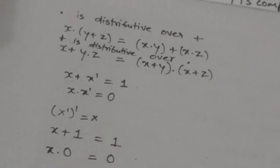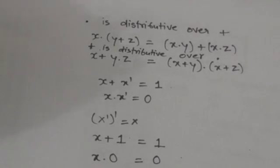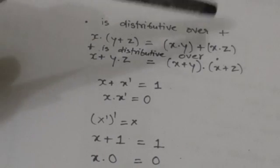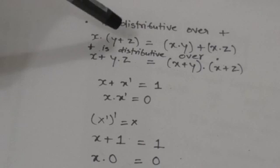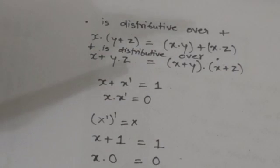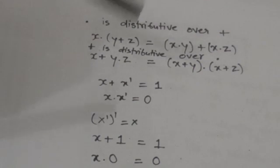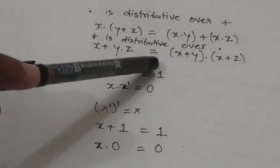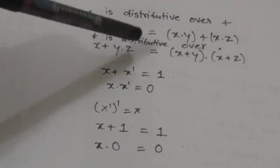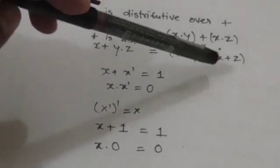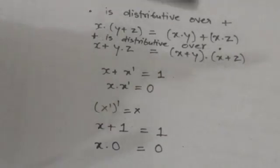The dot operator is distributive over the plus operator, meaning x dot (y plus z) equals (x dot y) plus (x dot z), where x, y, and z are Boolean variables, plus represents the OR operation, and dot represents the AND operation. Also, plus is distributive over dot, meaning x plus (y dot z) equals (x plus y) dot (x plus z).